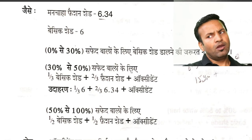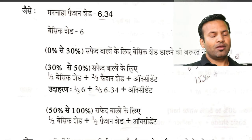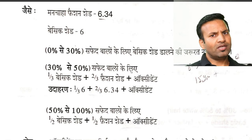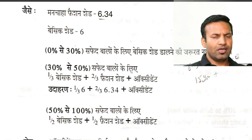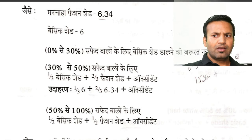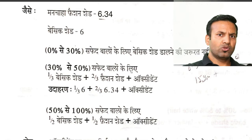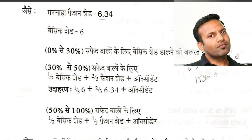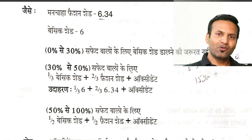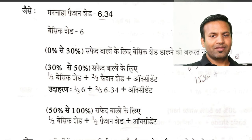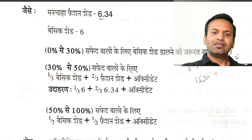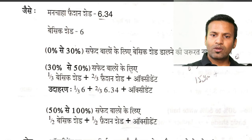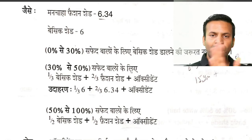अगर आपके client का desire shade है 7.71 या 7.83, तो इसका base क्या लेंगे हम? 7 — क्योंकि इसका 7 base है already। इसके बाद: 0 से 30% सफेद बालों के लिए basic shade डालने की ज़रूरत नहीं होती है।